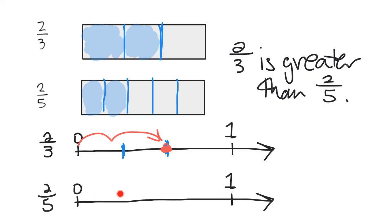Down here, for 2/5, I need to cut it into 5 equal-sized pieces: 1, 2, 3, 4, 5. Then to decide where 2/5 lives, I'm going to move over 2 intervals: 1, 2 — and there is my 2/5. I can see that the length for 2/3 is longer than the length for 2/5, so 2/3 is greater than 2/5.